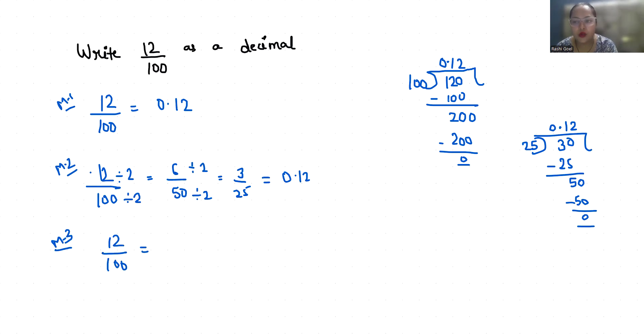You can simply put the decimal before the number of digits depending upon the number of zeros in the denominator. So there are two zeros in the denominator, so one, two.